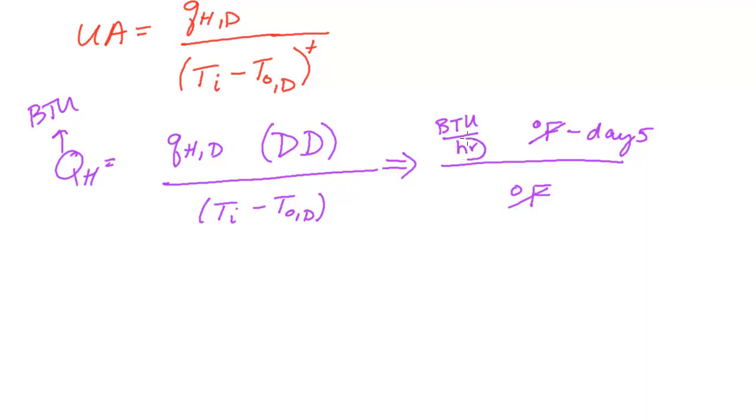But notice that we have an hour here and a days here. So this equation over here really is missing a factor of 24. So we really need 24. And that stands for 24 hours in one day. So day cancels day. Hour cancels hour. And we're left with BTU. And so this is another form of the very simple degree day method formula for the total heating energy.